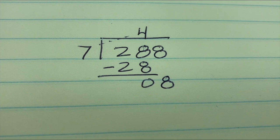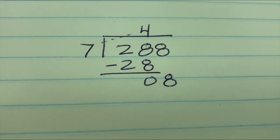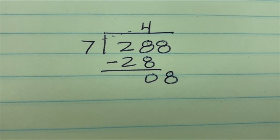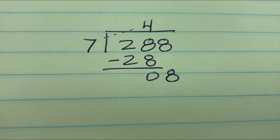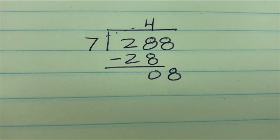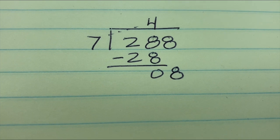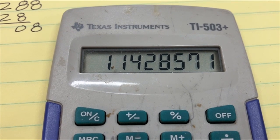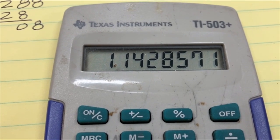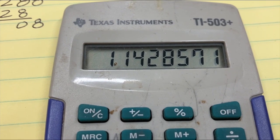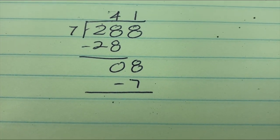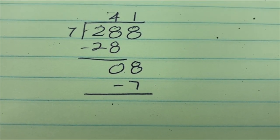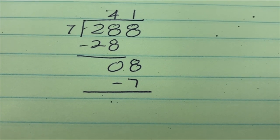So 28 minus 28 is 0, and we had to bring the 8 down. So our next division is 8 divided by 7, and I know you know it's 1, but we'll do it on the calculator anyways. We're doing 8 divided by 7. Yep, 8 divided by 7 equals 1, and a whole bunch of decimals. We're just going to worry about the 1.